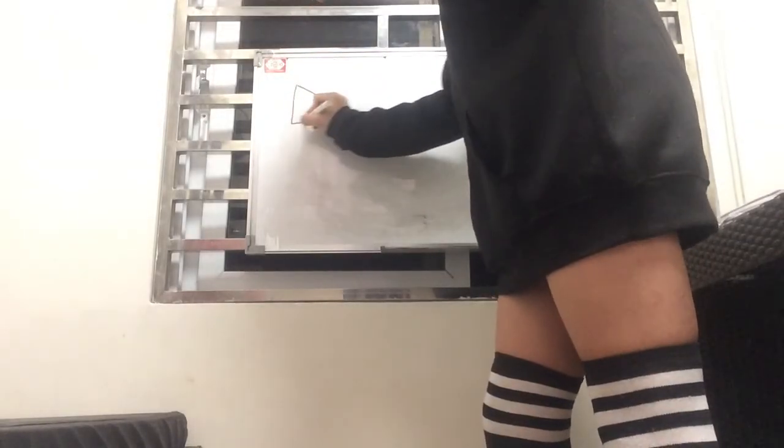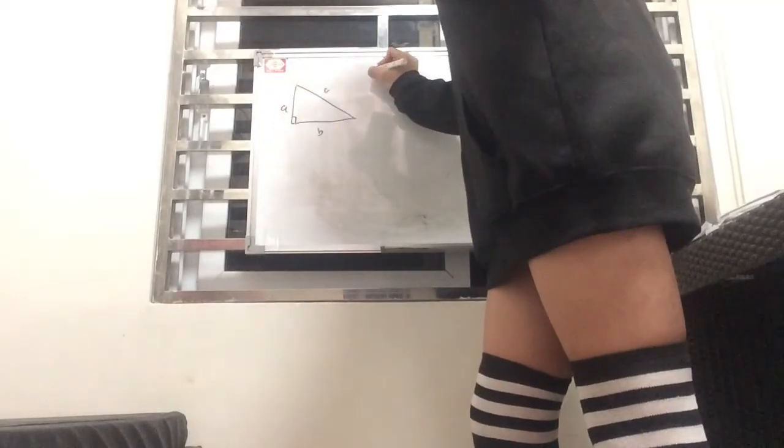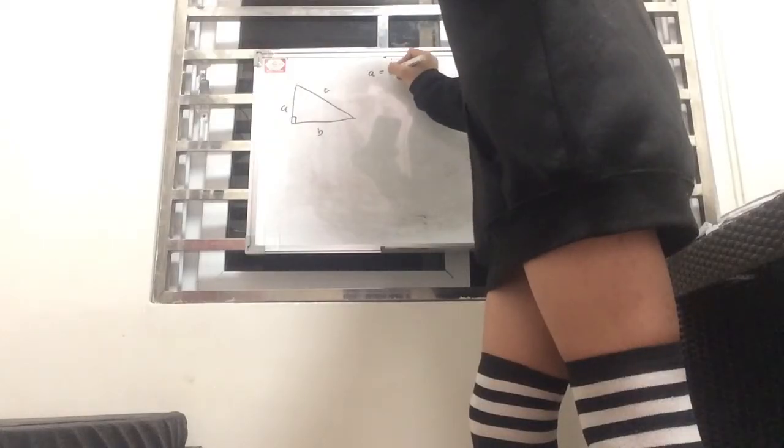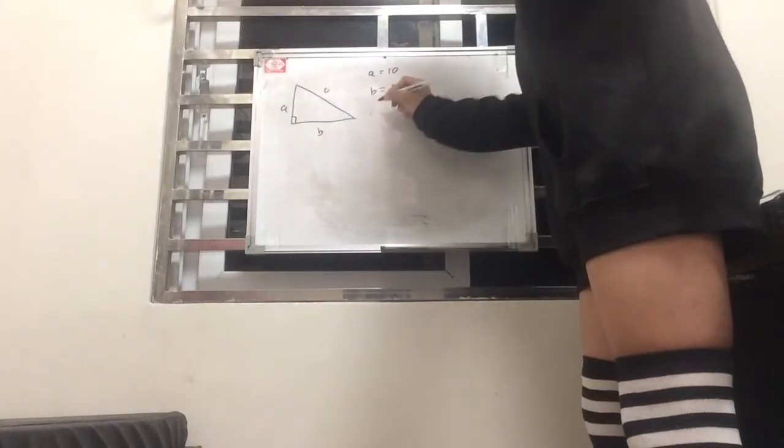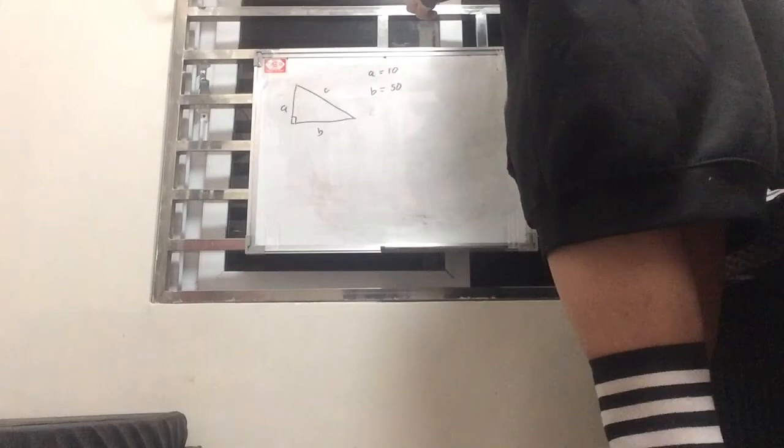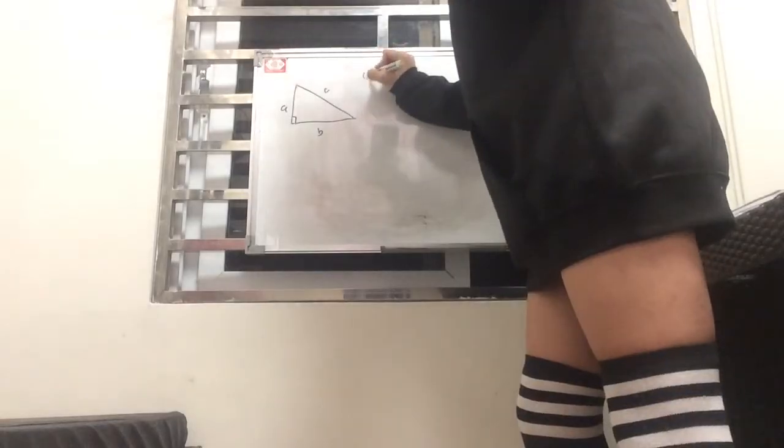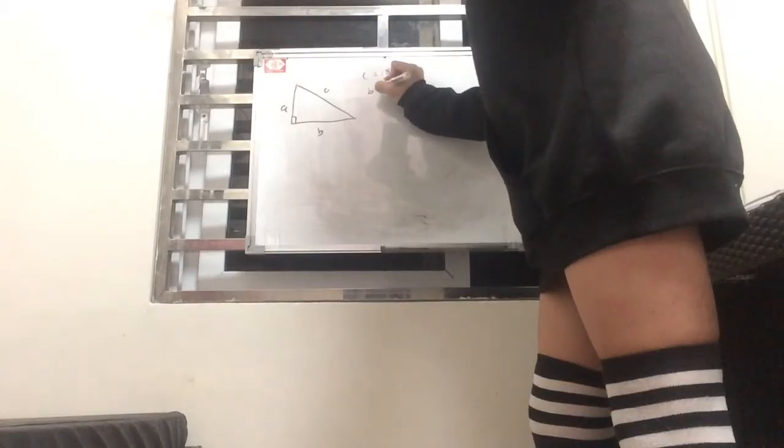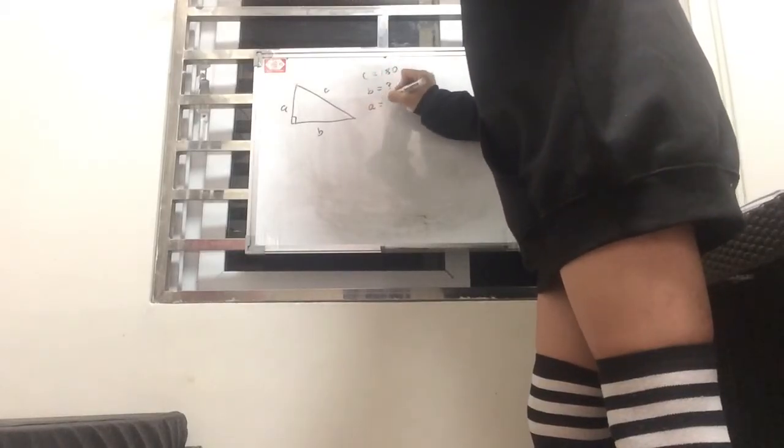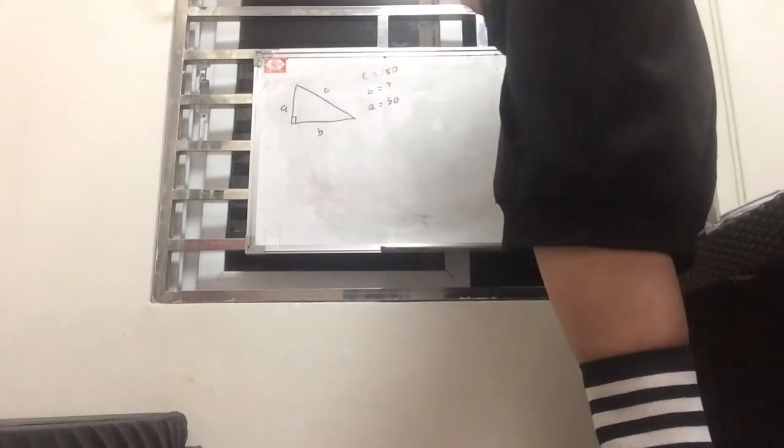Let's say we're given this right triangle over here: c, a, and b. Let's say that a is 10 and b is 50. Actually, let's try to find a different one. Let's say c is already given this time. C is 80. Let's make b as the unknown and a is equal to 50.